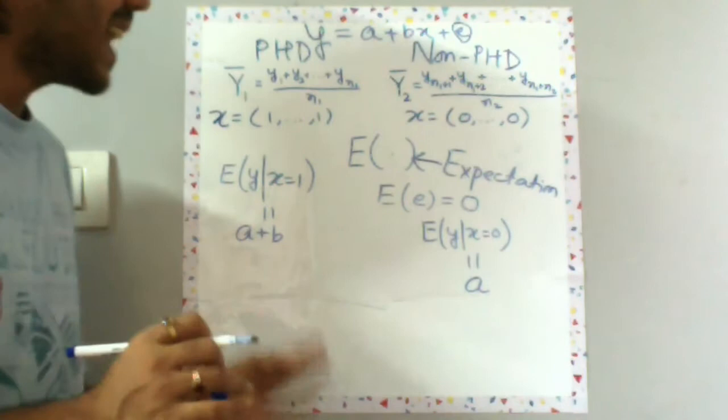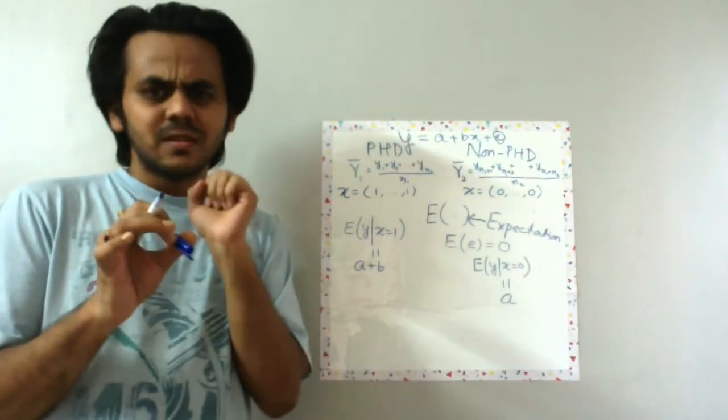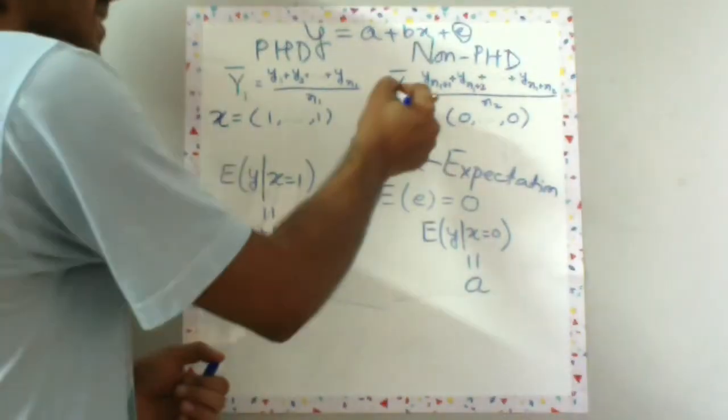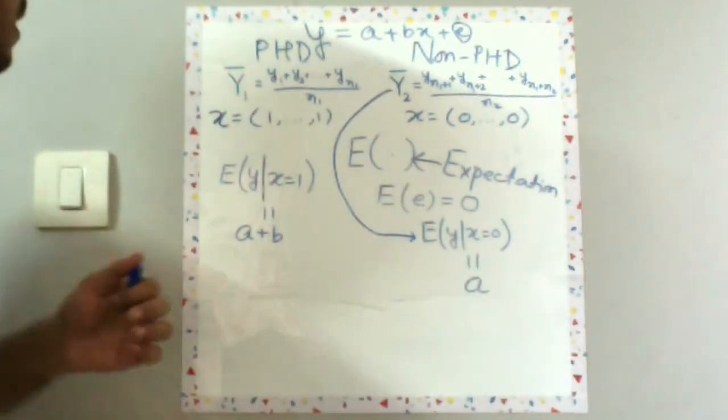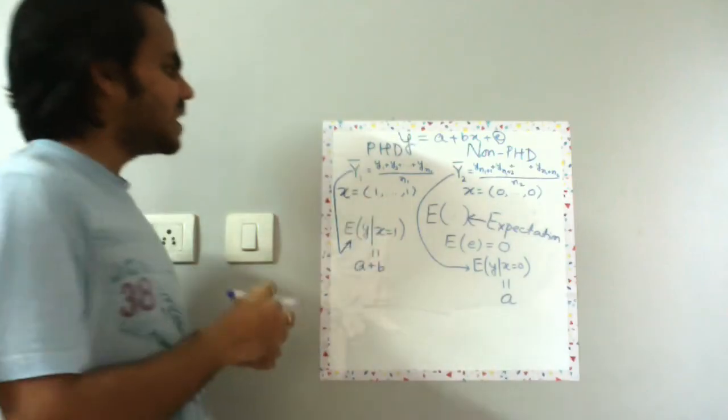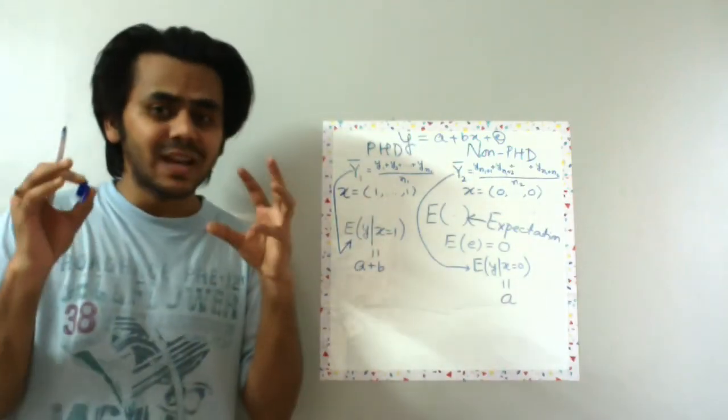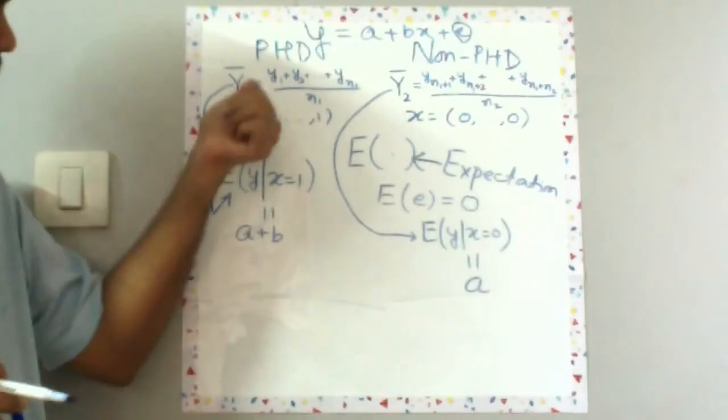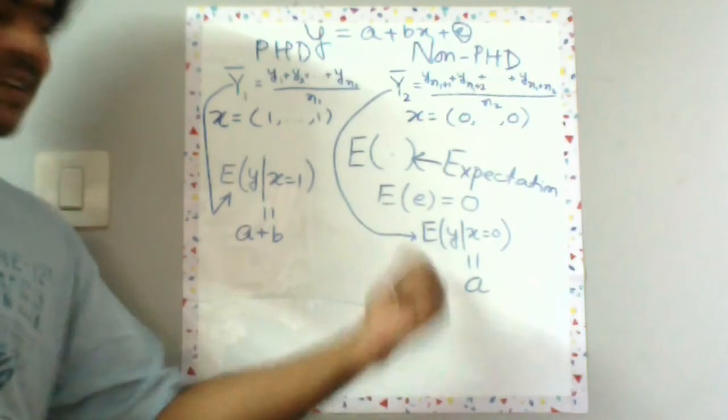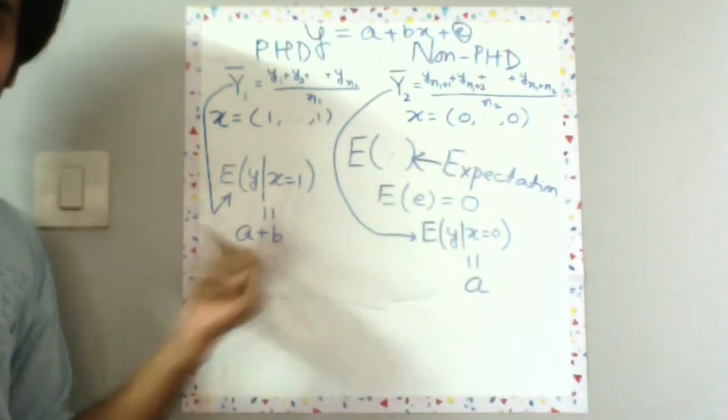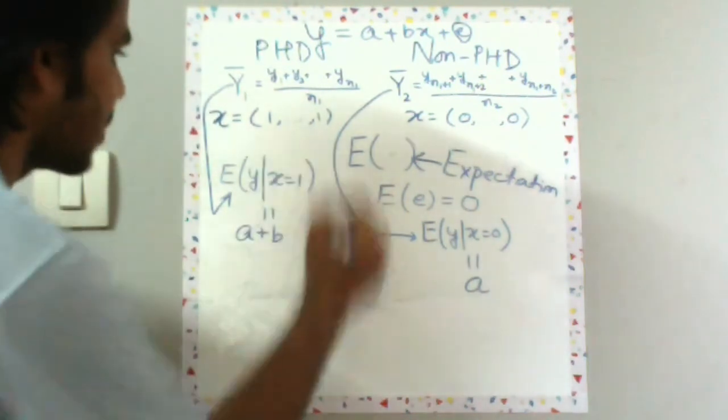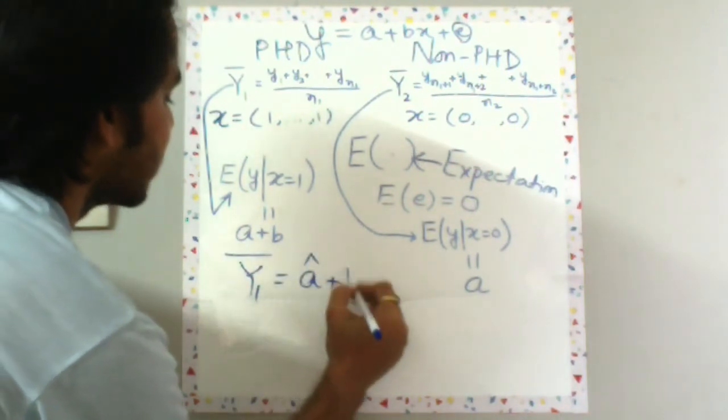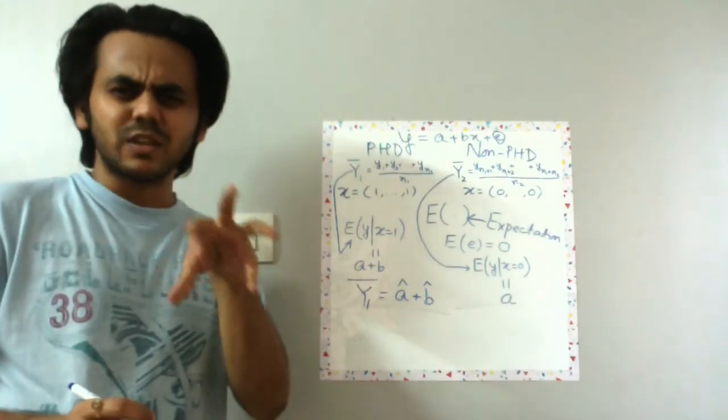Now we know that expected salary of non-PhD graduates should be the average salary, which is Y2 bar, so we can kind of bring this thing here. And similarly we can bring in the average salary of the PhD graduates here. But there's a small catch here. We can never calculate a and b, we can only estimate them. So whenever you're bringing it here, you have to change a and b to a hat, b hat. So the modification is Y1 bar is equal to a hat plus b hat. This is a slight technical modification which is quite easy to get if you follow through this lecture series.